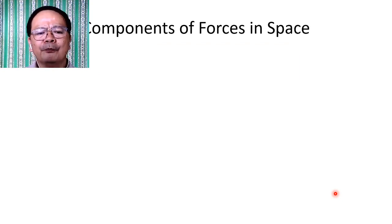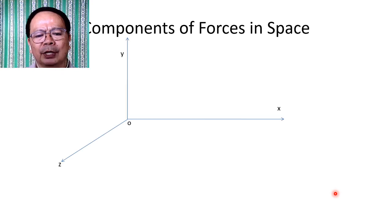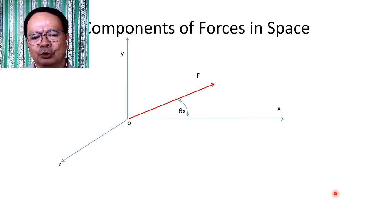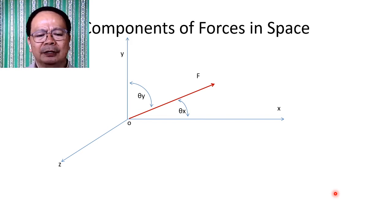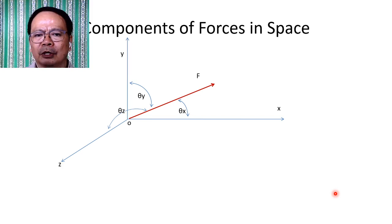What if the components of the force in space are computed such that the direction of the force is given in terms of the angle it is making with respect to the three mutually perpendicular axes? Let us imagine we have a force directed in a certain direction. This direction is given in terms of the angle it makes with the X-axis, defined by θ_x; with the Y-axis, defined by θ_y; and with the Z-axis, defined by θ_z.